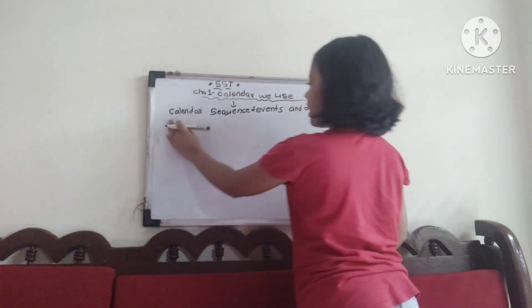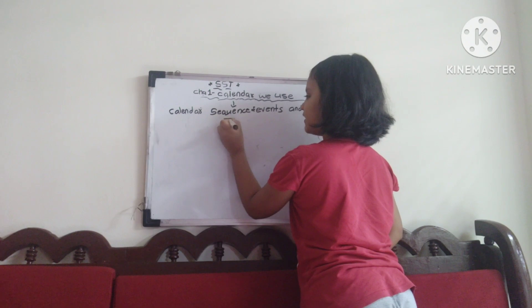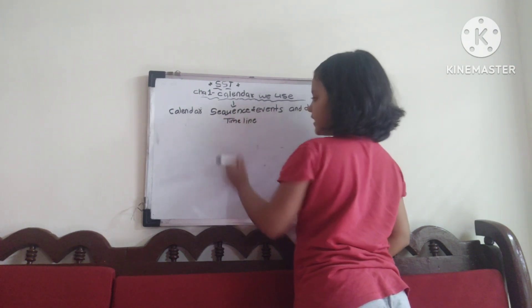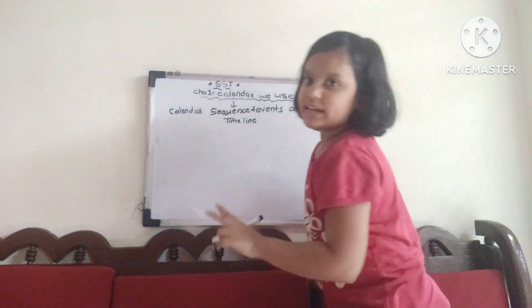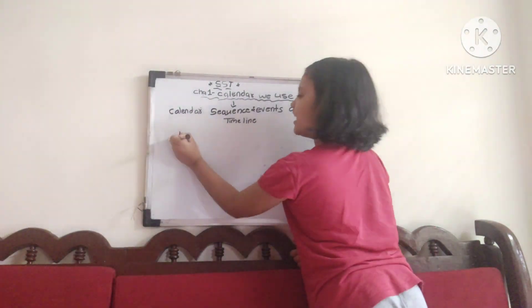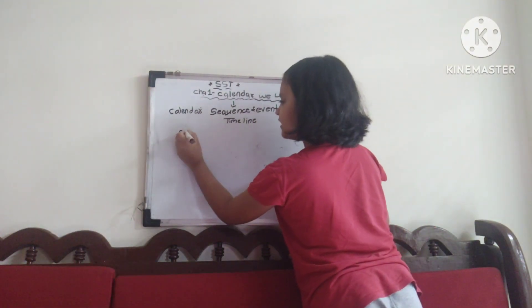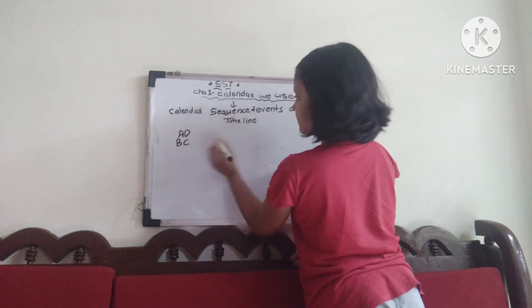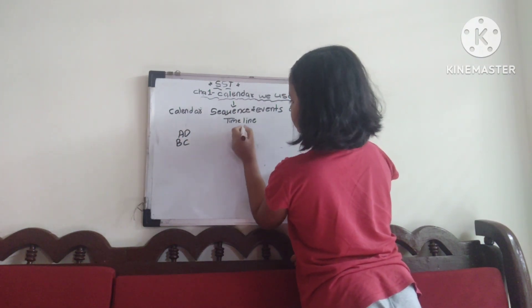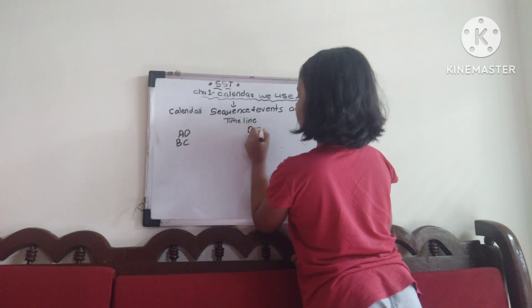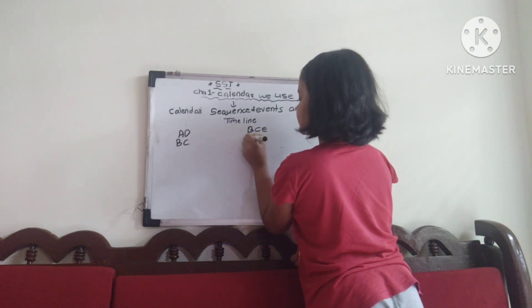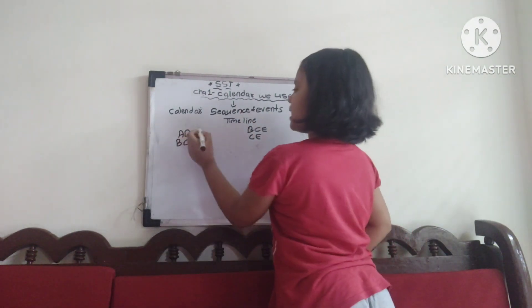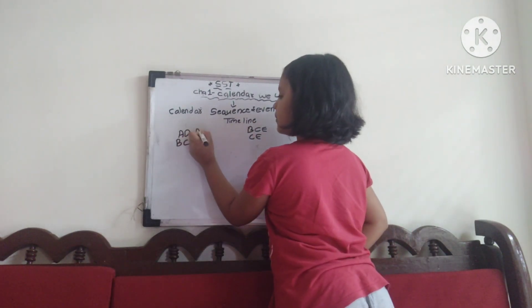After calendar comes timeline. In a timeline there are two basic points: AD and BC, and BCE and CE. So what is AD? AD means Anno Domini.